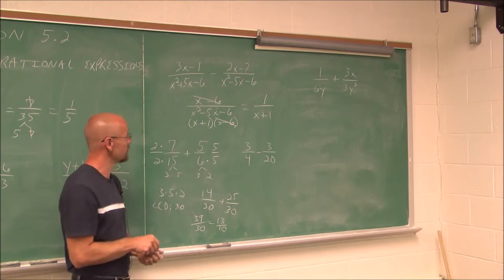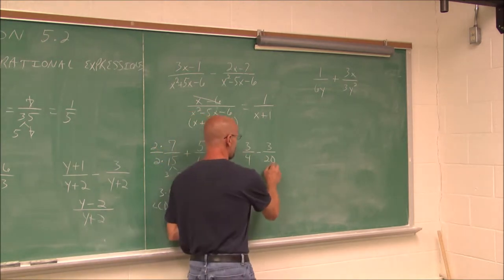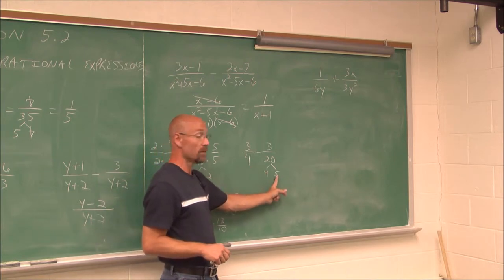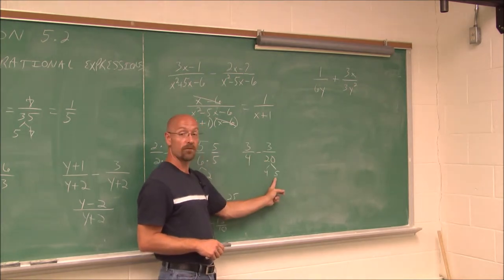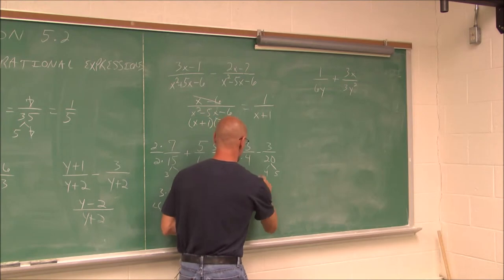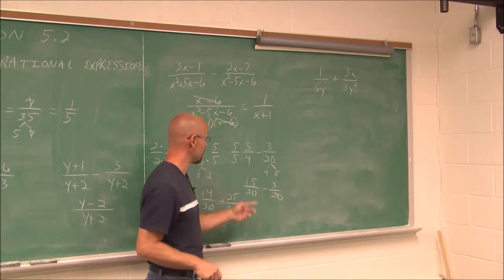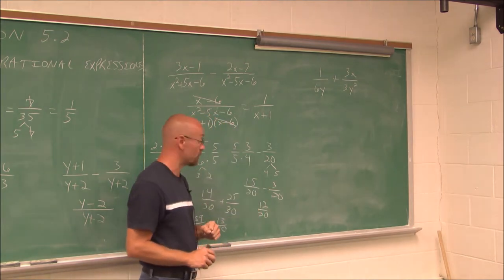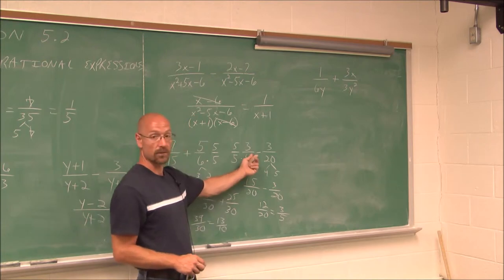Let's look at another example: 3 fourths minus 3 twentieths. Factoring the larger value, 20 is 4 times 5, so they have a common factor of 4. To make the denominator 20, we need to multiply by 5 over 5, giving 15 over 20 minus 3 over 20. The difference is 15 minus 3 equals 12. Then 12 over 20 have a common factor of 4, so we reduce to get 3 fifths.